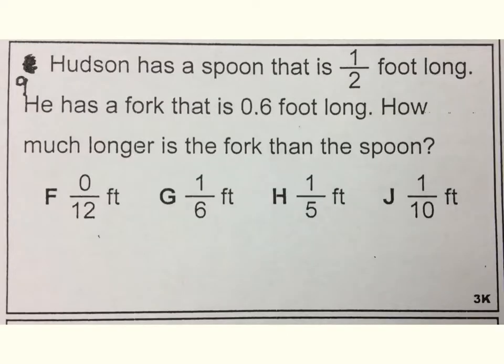Number nine. Hudson has a spoon that is one-half foot long. He has a fork that is six-tenths foot long. How much longer is the fork than the spoon?